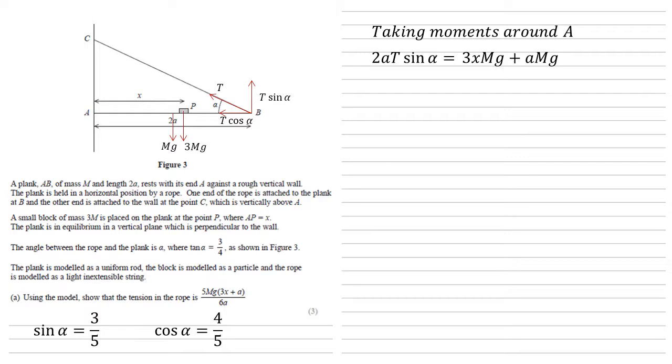Now replacing sine alpha with three fifths, which we know it is, and factorizing the right-hand side, we get that six fifths AT equals mg brackets 3X plus A. Dividing by six fifths gives us AT equals 5Mg brackets 3X plus A over 6, and dividing by A gives us 5Mg brackets 3X plus A all over 6A as required.